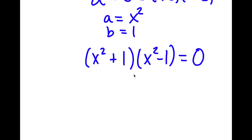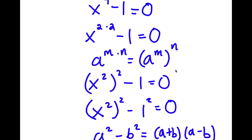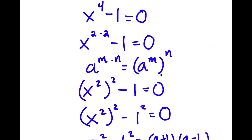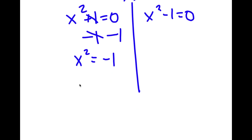This gives me two equations: x squared plus 1 is equal to 0, and x squared minus 1 is equal to 0. For x squared plus 1 equals 0, I'm going to start by subtracting 1 on both sides. These cancel out and I get x squared is equal to negative 1.